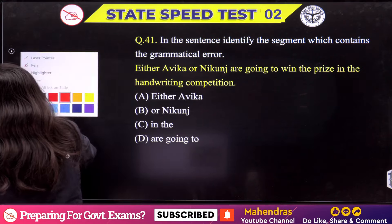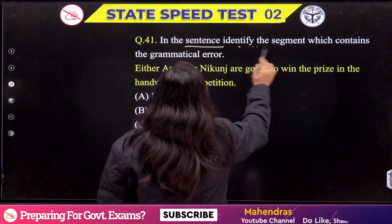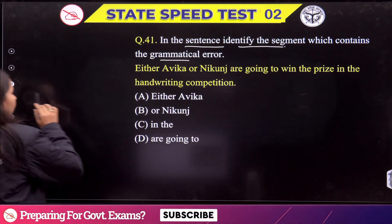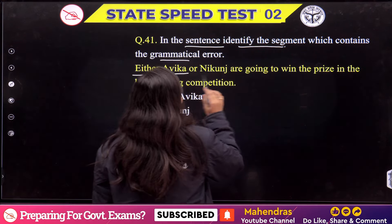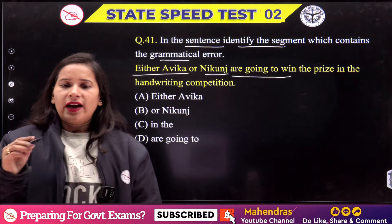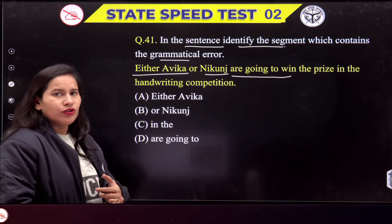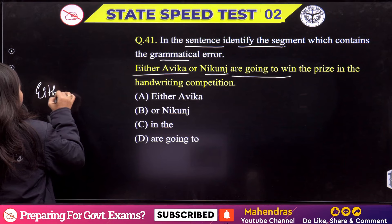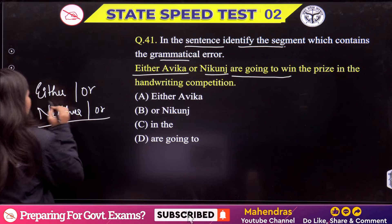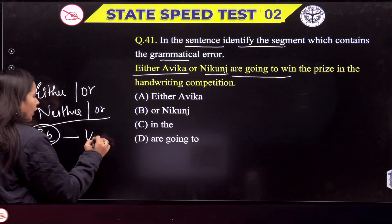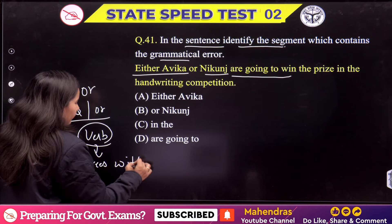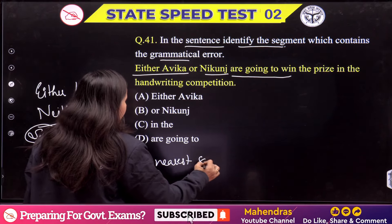What has been written here? In the sentence, identify the segment which contains the grammatical error. Here you will find out which segment has the grammatical error. See: 'Either Avika or Nikunj are going to win the prize in the handwriting competition.' Either Avika will win, or Nikunj. Whenever there are 'either/or' or 'neither/nor' sentences where the subject is connected, the verb agrees with the nearest subject.